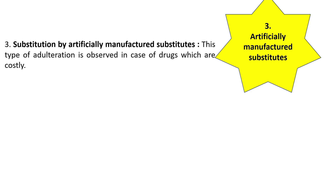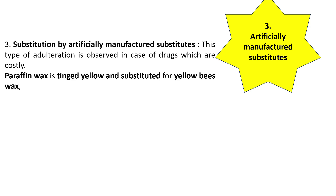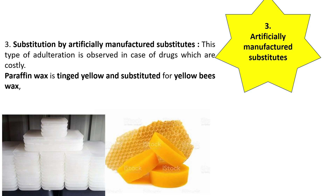Number three: artificially manufactured substituents. This type of adulteration is observed in case of costly drugs. Paraffin wax is tinted yellow and substituted for yellow beeswax. White artificial invert sugar is added with honey.